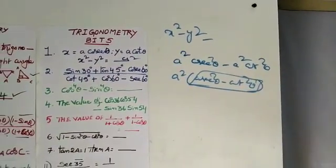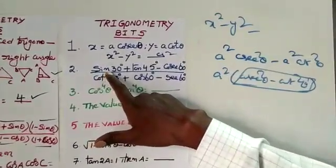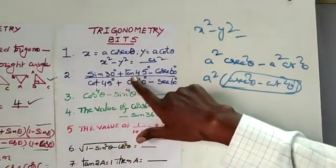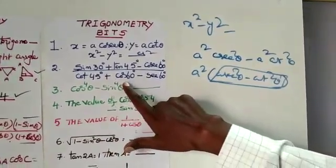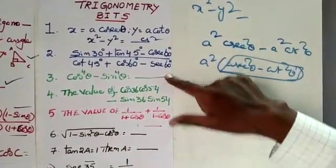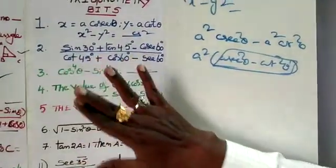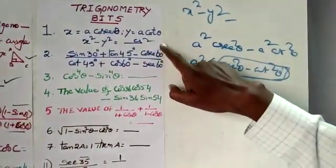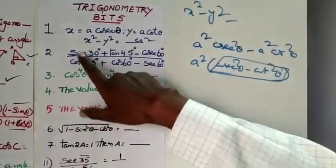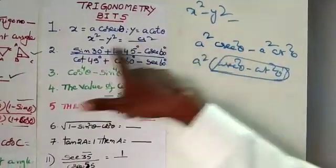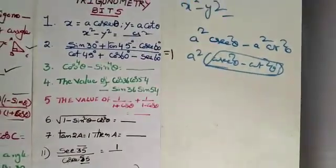Next, children, here is a very useful shortcut to get the answer. The numerator is sin 30 plus tan 45 minus cosec 60. The denominator is cot 45 plus cos 60 minus sec 60. Since tan 45 and cot 45 are both 1, and sin 30 and cos 60 are both 1/2, everything cancels in mind calculation. This value is equal to 1.